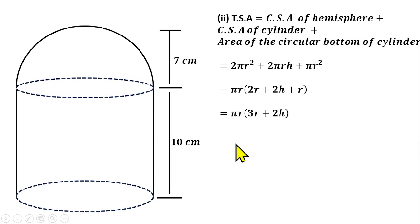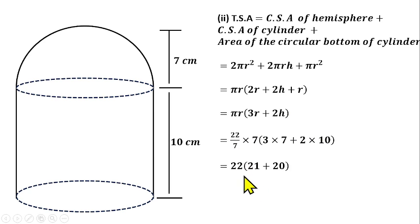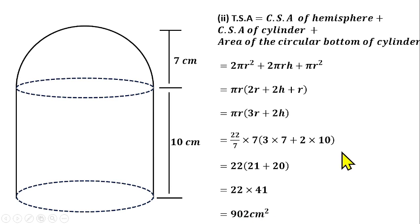Now substituting the values: π = 22/7, radius r = 7, height h = 10. So: 22/7 × 7 × (3 × 7 + 2 × 10). The 7s cancel, giving 22 × (21 + 20) = 22 × 41 = 902 square centimeters as the total surface area of the solid shape.